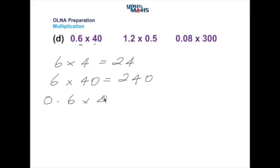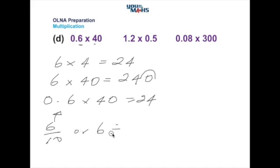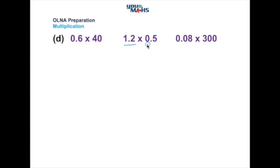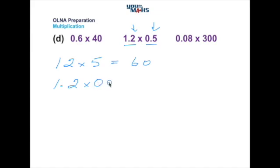Now let's consider 0.6 multiplied by 40. The solution involves removing one of the zeros — pushing the decimal point back to get an answer of 24. Why? Because 0.6 is 6 over 10, or 6 divided by 10. When you divide a number by 10 you reduce it by one place value. In the next example, ignore the decimal points and consider it as 12 multiplied by 5, which is 60. We've got one decimal place in each number, so we move the decimal point in 60 two places to the left, making the answer 0.6.